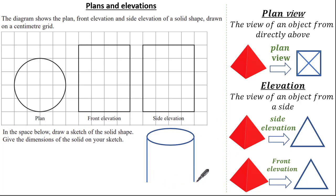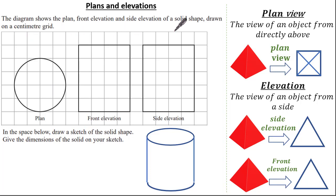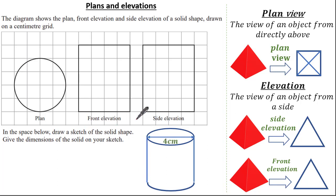The base of our shape isn't any different given our plan view, so therefore our solid is a cylinder. The question asks us to state our dimensions on a centimeter square grid. Looking at my cylinder, the diameter must be 1, 2, 3, 4 centimeters across, and the height of our cylinder must be 1, 2, 3, 4, 5 centimeters tall.